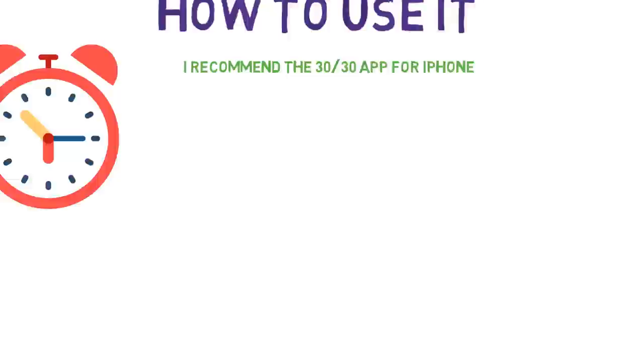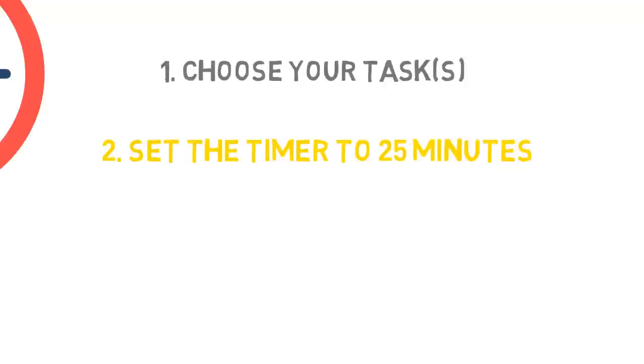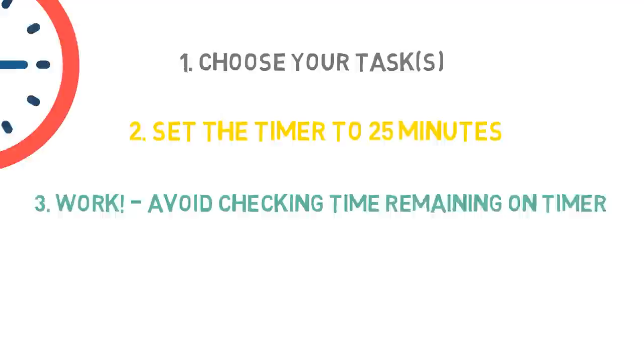So first, choose a task or series of tasks that you need to accomplish. Next, set the timer to 25 minutes. Continue to work on the task until the timer goes off. Avoid constantly checking the timer.